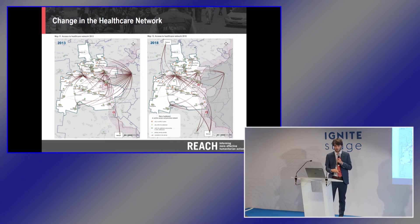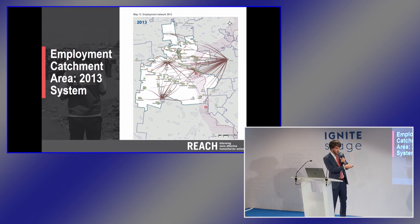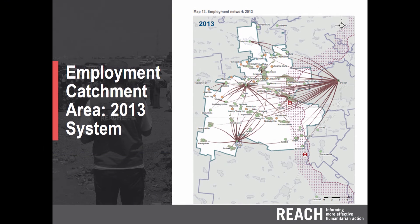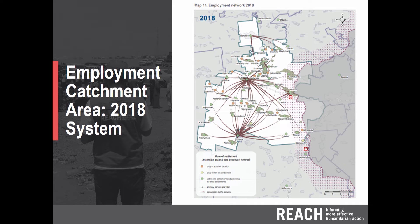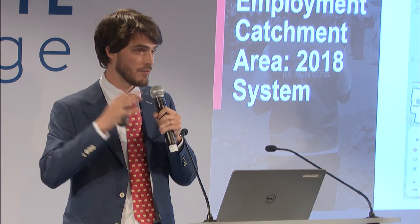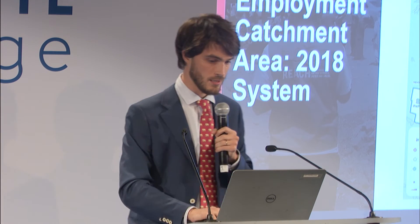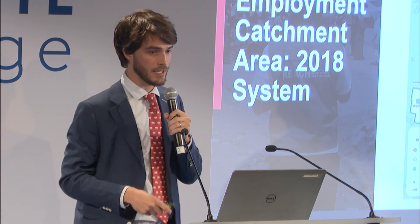We didn't stop at healthcare only — we also looked at employment markets. In very similar dynamics to healthcare, about 23 settlements were depending on this large urban center for employment. Can anybody guess how many now commute to Donetsk to work? The answer is zero. Nobody now commutes to Donetsk for work. The consequences on employment, household economic security, and development are major — affecting job creation, education, healthcare, governance, and financial services.